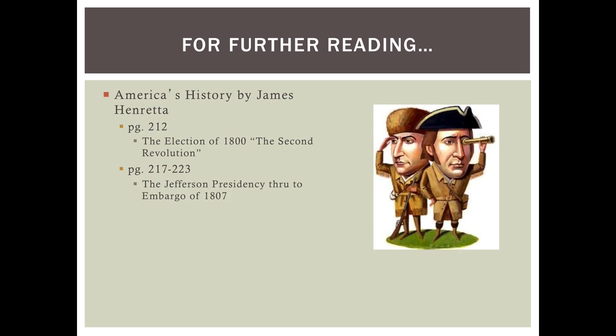We're going to end it there. For further reading, please turn to your textbook. Page 212 talks about the election of 1800, or as Jefferson called it, the Second Revolution. Pages 217 to 223 cover the Jefferson presidency through the Embargo of 1807. There's also a political cartoon there of Lewis and Clark — the guys who surveyed the Louisiana Territory. See everybody later.